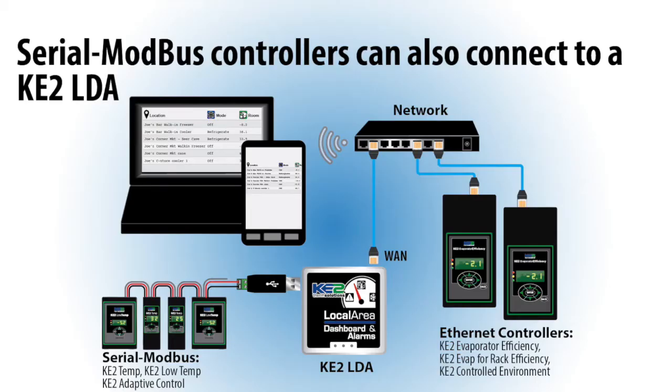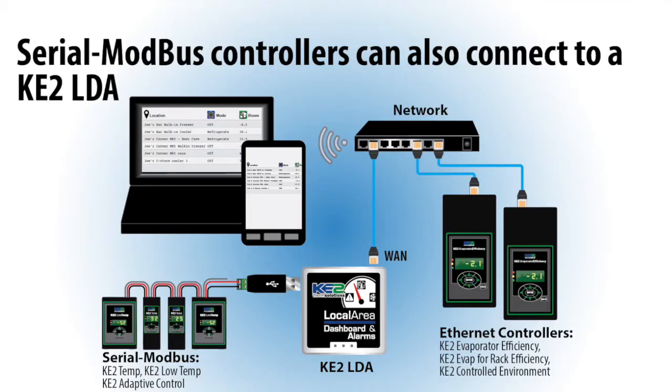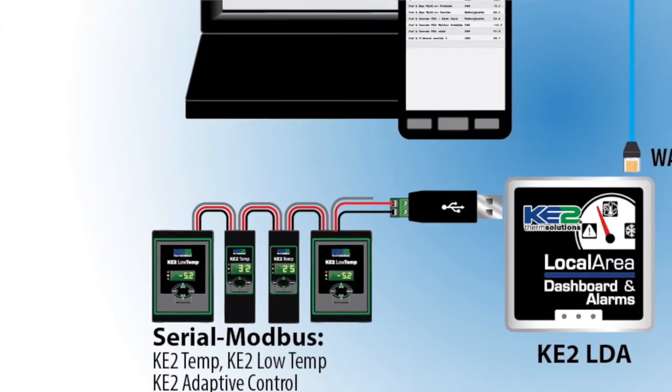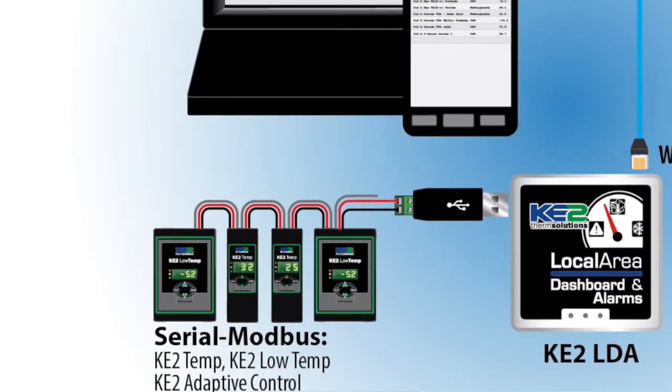Even serial Modbus controllers like the Key2 Temp, Key2 Low Temp, or Key2 Adaptive Control can be connected using the Key2 LDA. The controllers are displayed, but this is only the local network. To access these controllers from anywhere 24-7, we need to use the Key2 Smart Access portal.